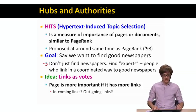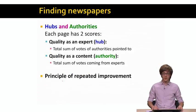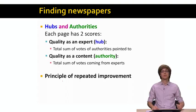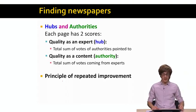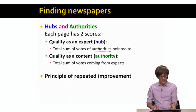Similar to PageRank, the idea is that we count links as votes, and a page is more important if it has more links. Every page will have a hub score and an authority score. The hub score reflects the quality of a page as an expert, and the authority score reflects its quality as a content provider. The hub score is the sum of authority scores of pages it points to, and the authority score is the sum of hub scores of pages pointing to it.